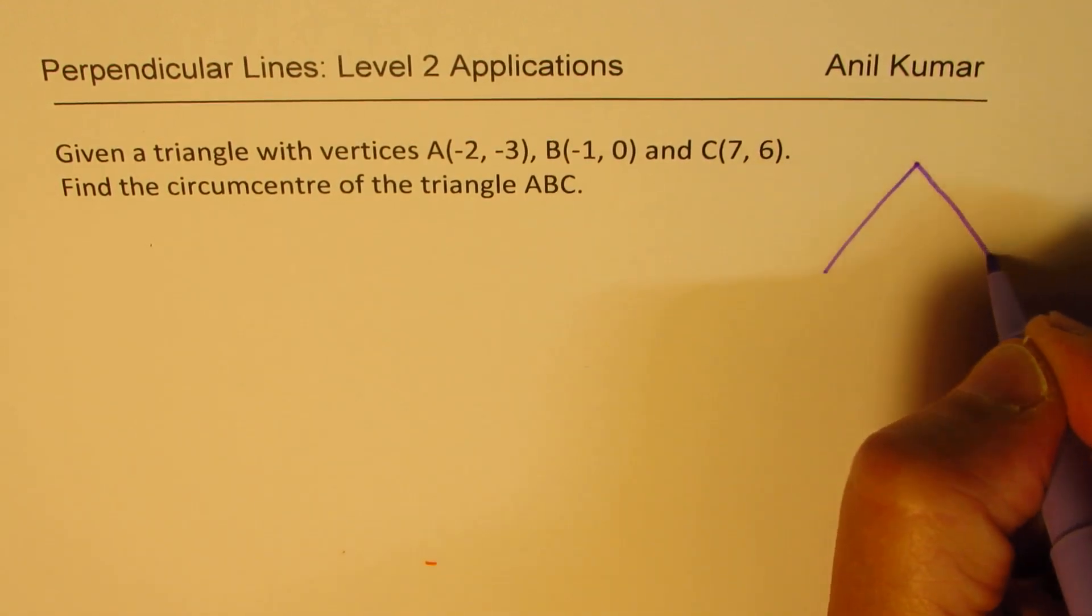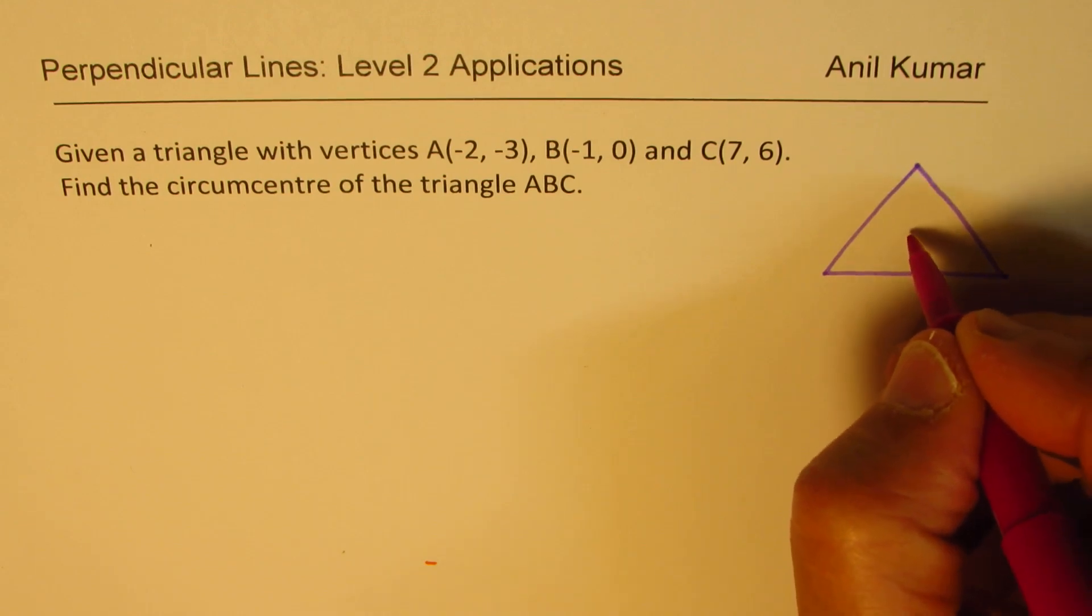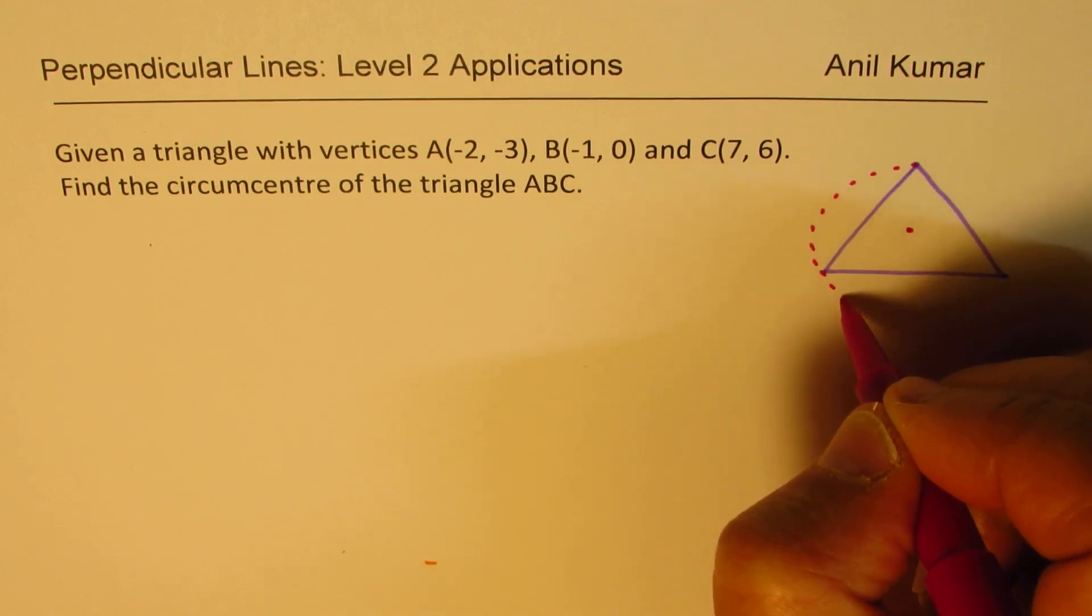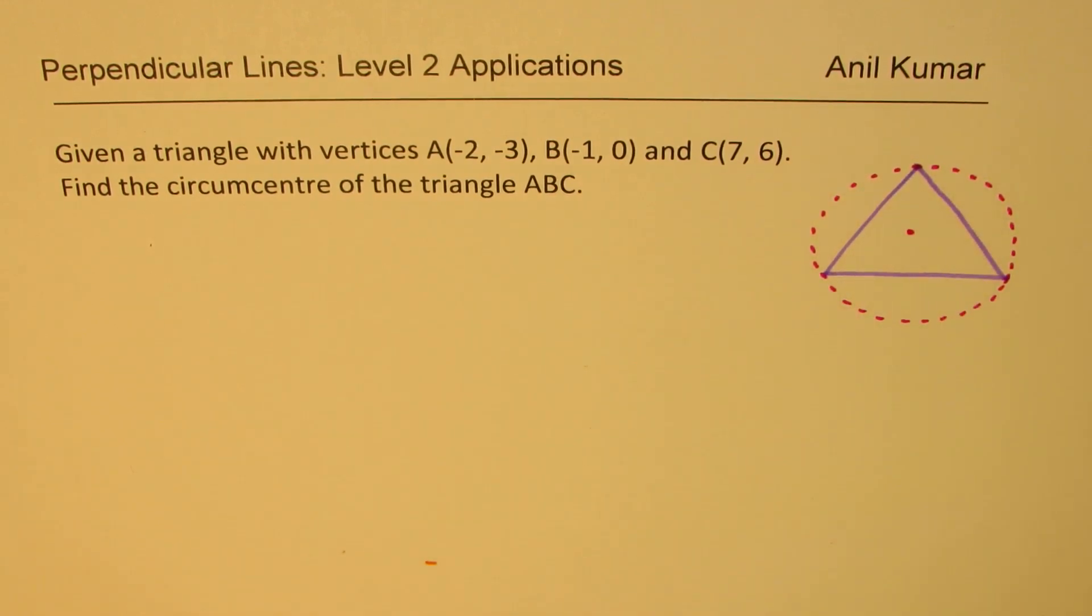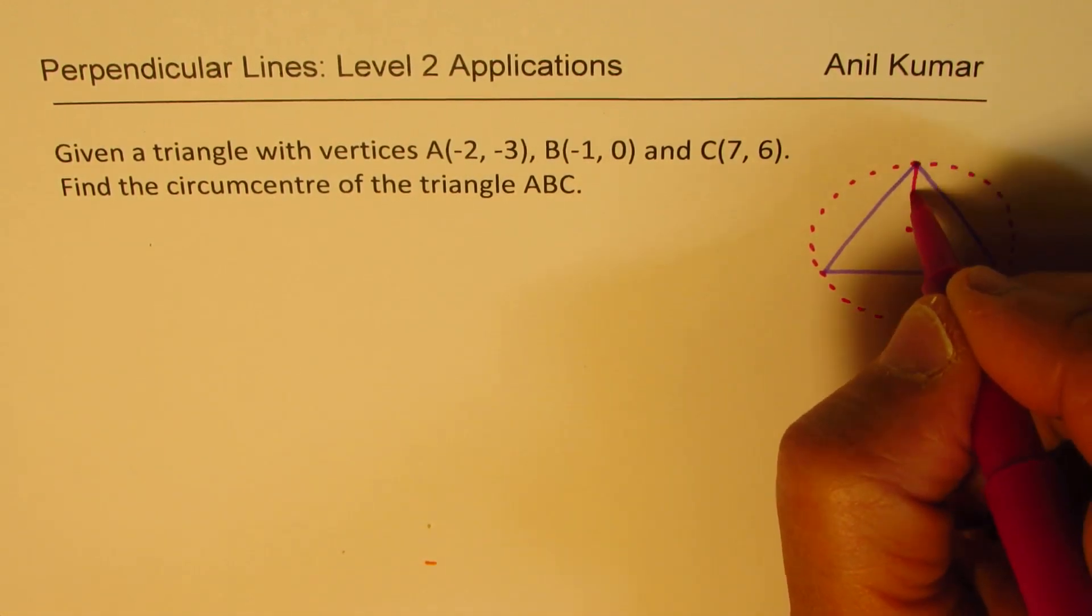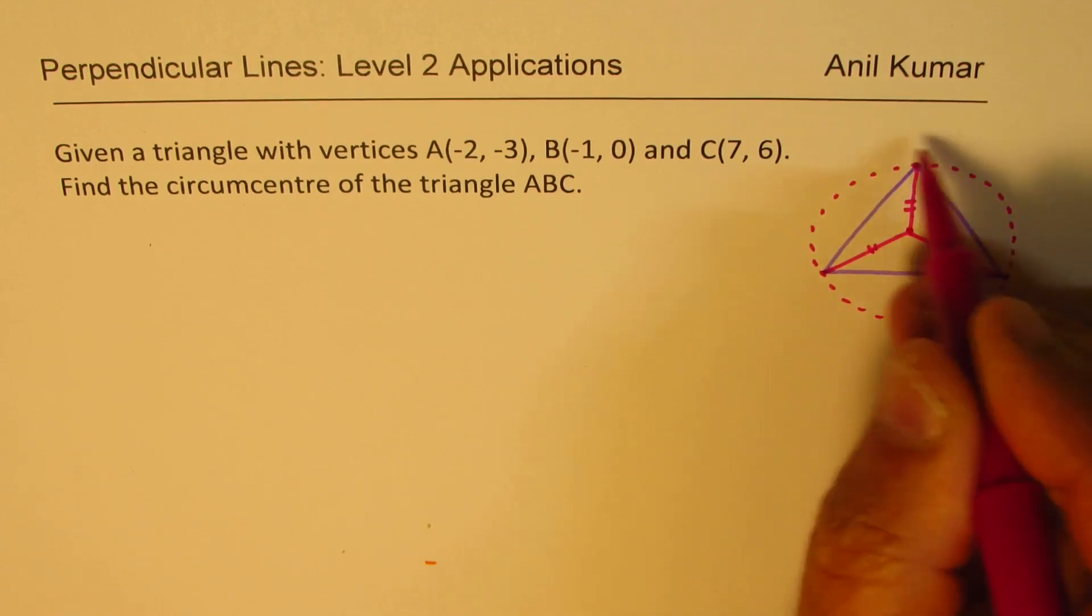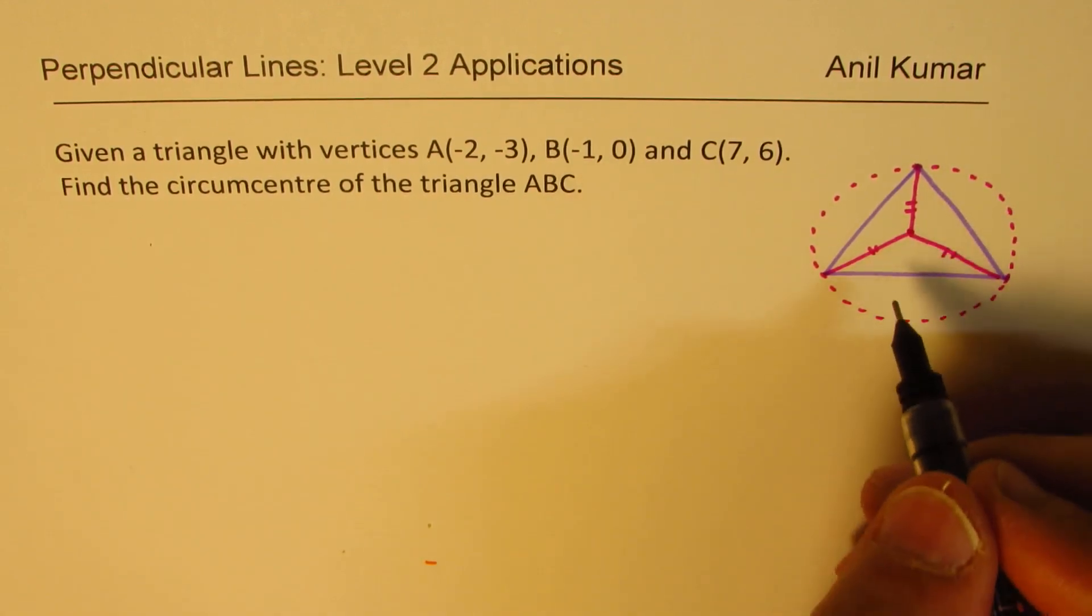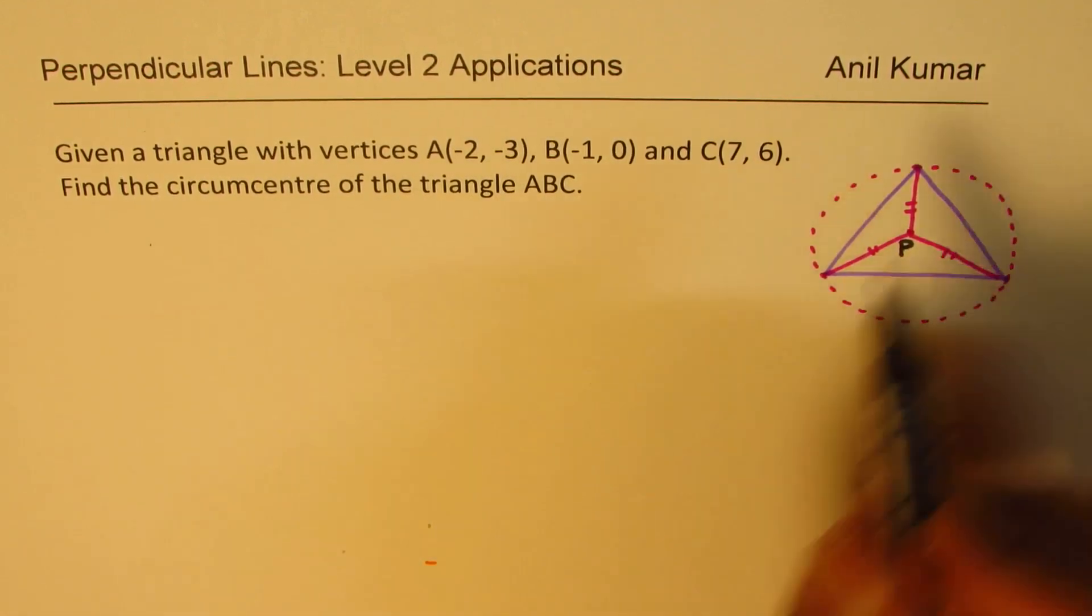Now, what is circumcenter? Circumcenter is a point from where you can actually draw a circle so that the circle touches all these vertices. So we are looking for a point which is same distance from each vertex. The idea is to draw a circle, and that point is called circumcenter. Now, how do we find coordinates of this point? In our case,